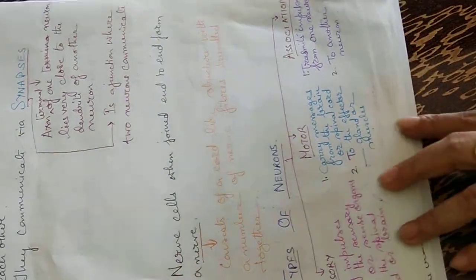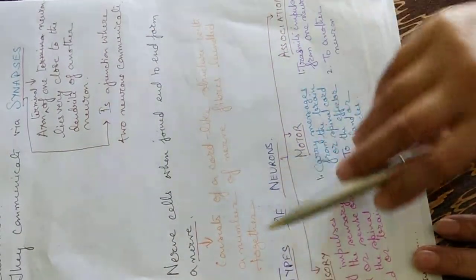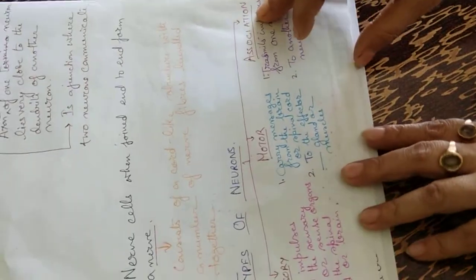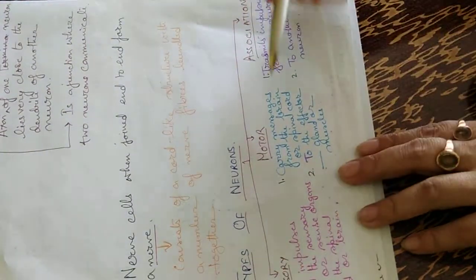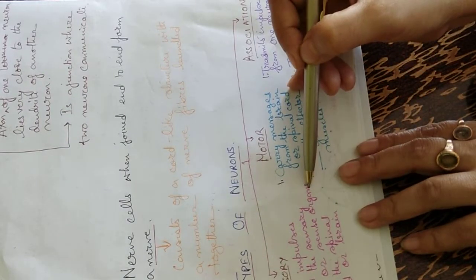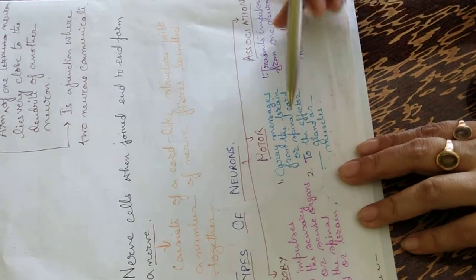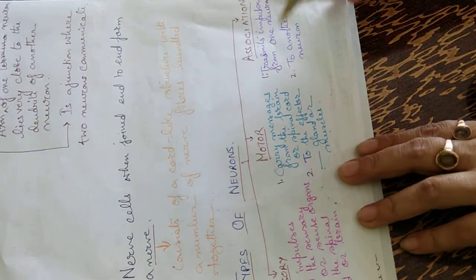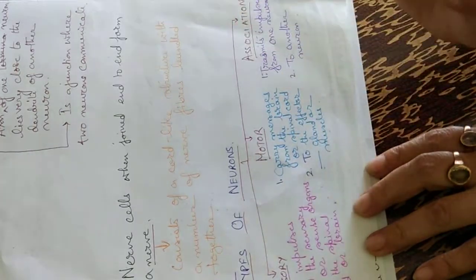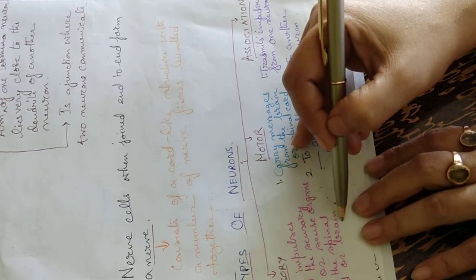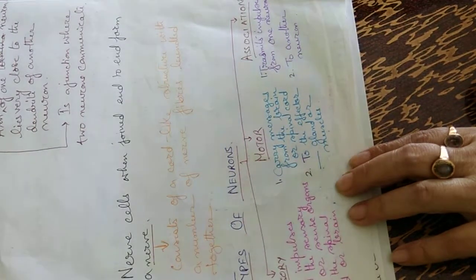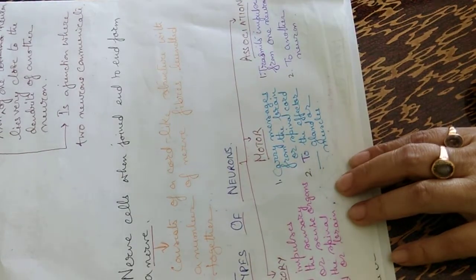When nerve cells are joined end-to-end, they form a nerve — a cord-like structure with a number of nerve fibers bundled together. There are three types of neurons: sensory, motor, and association neurons. Sensory neurons carry impulses from sensory cells or sense organs. Motor neurons carry messages from the brain or spinal cord to the effectors — that is, glands or muscles. Association neurons transmit impulses from one neuron to another.